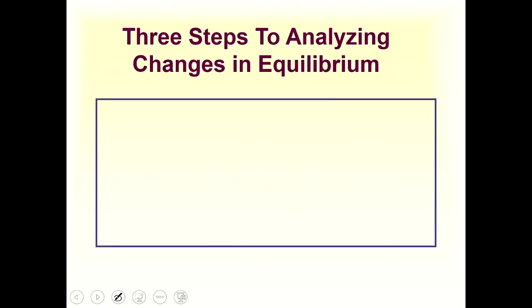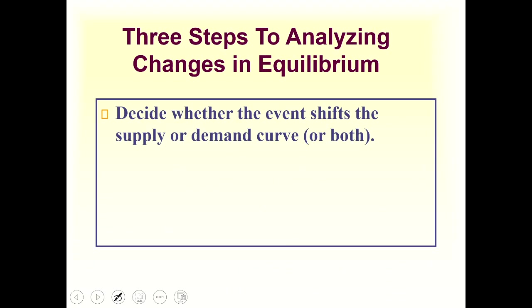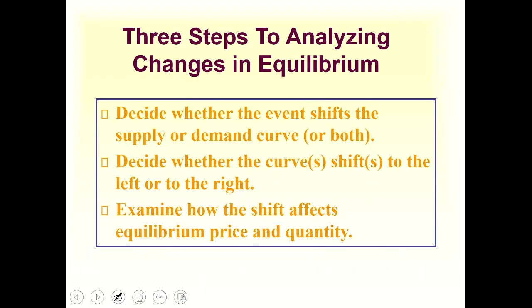There are just three steps to analyze changes in equilibrium. Whenever there is a change in demand or supply we will have a new equilibrium, and this is the analysis of that process. Step one: decide whether the event shifts the supply curve, the demand curve, or both. When you read the statement — whether there is an increase in demand or an earthquake decreasing supply — you must first decide which curve will shift.